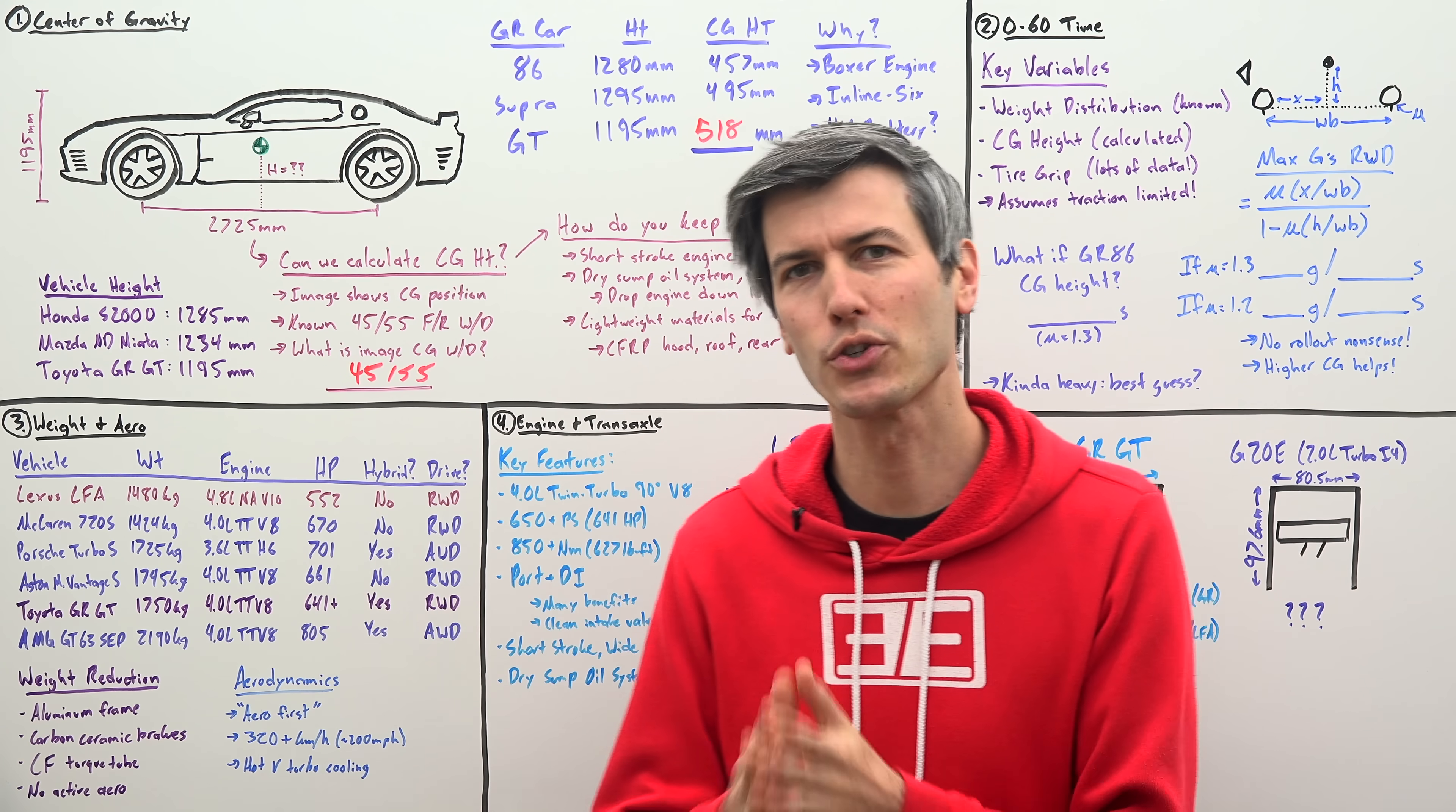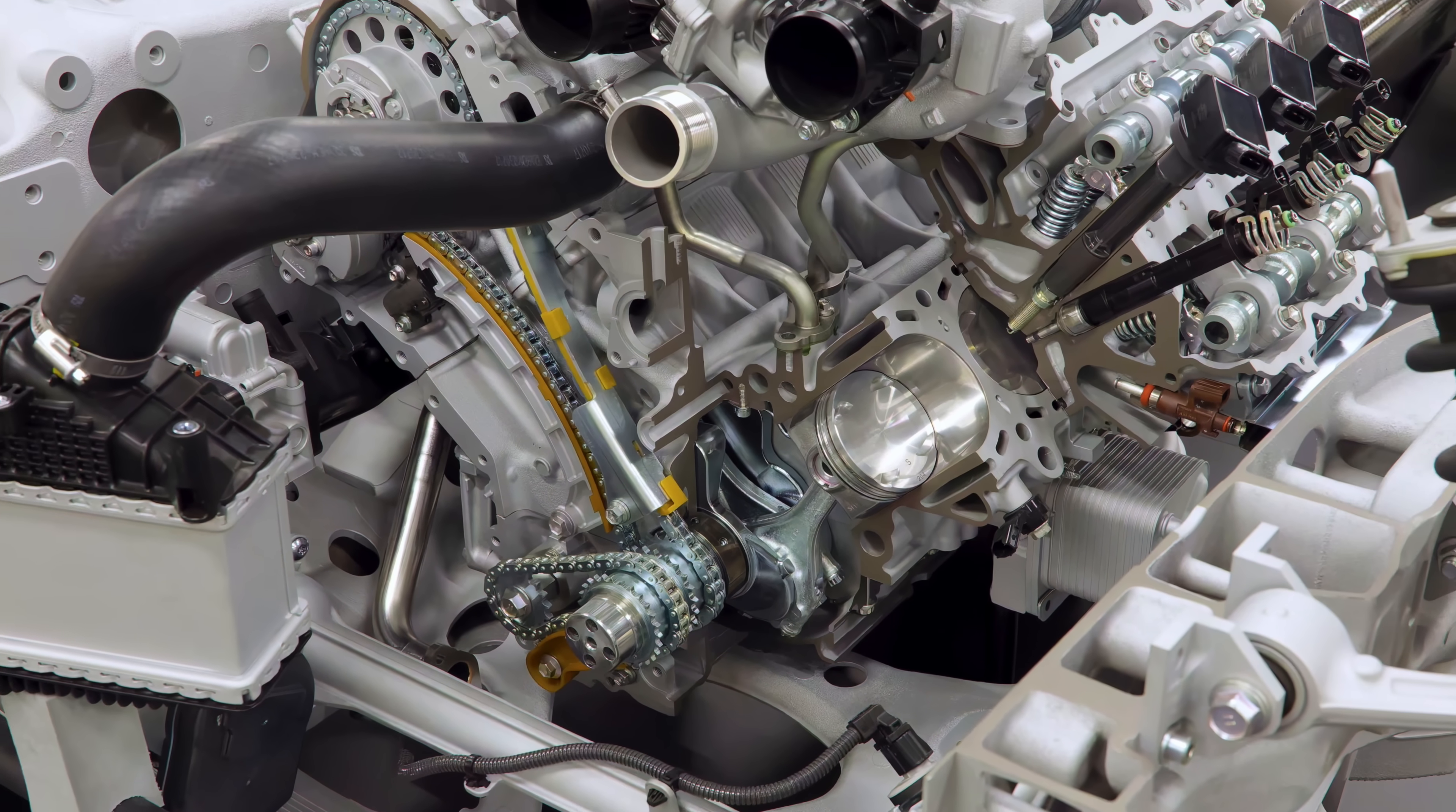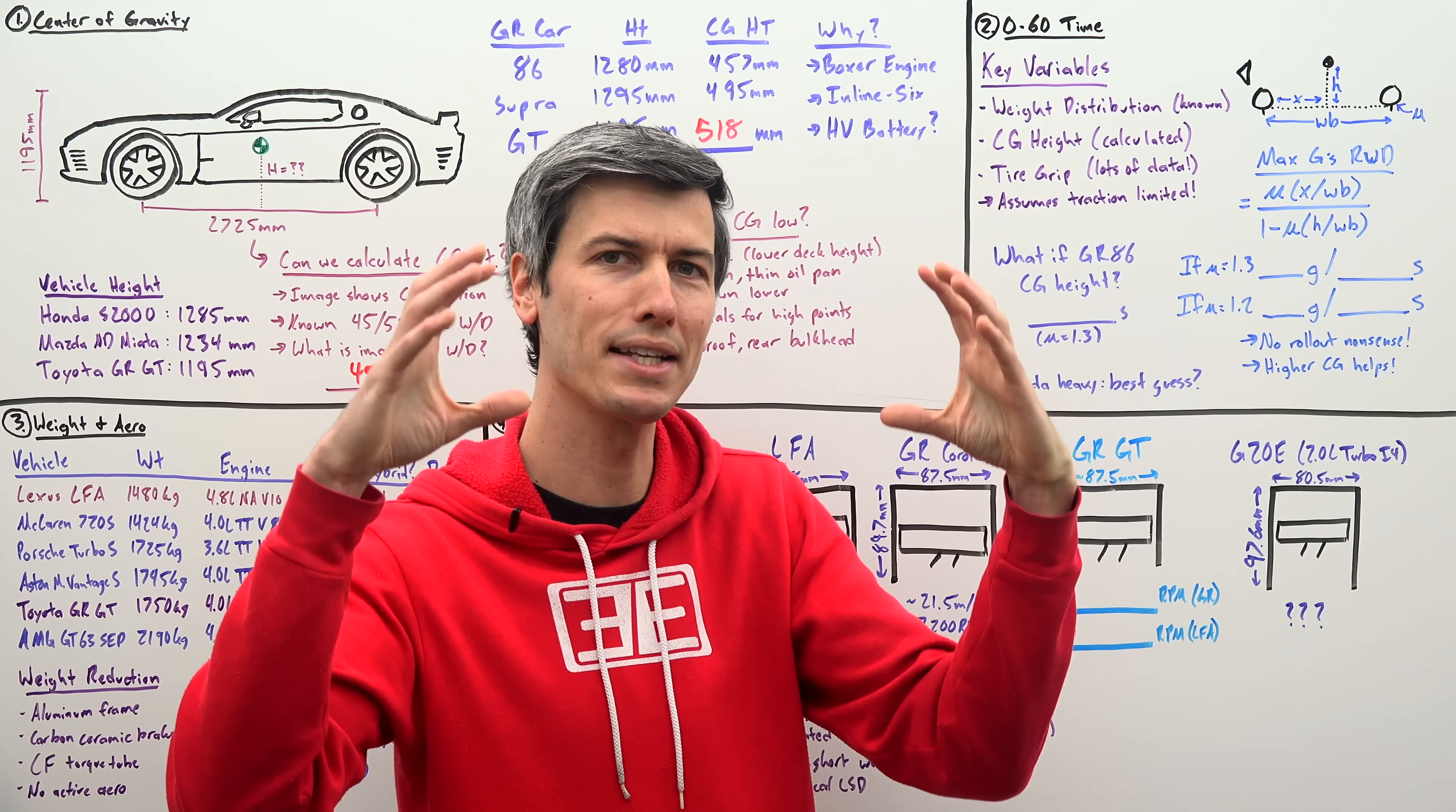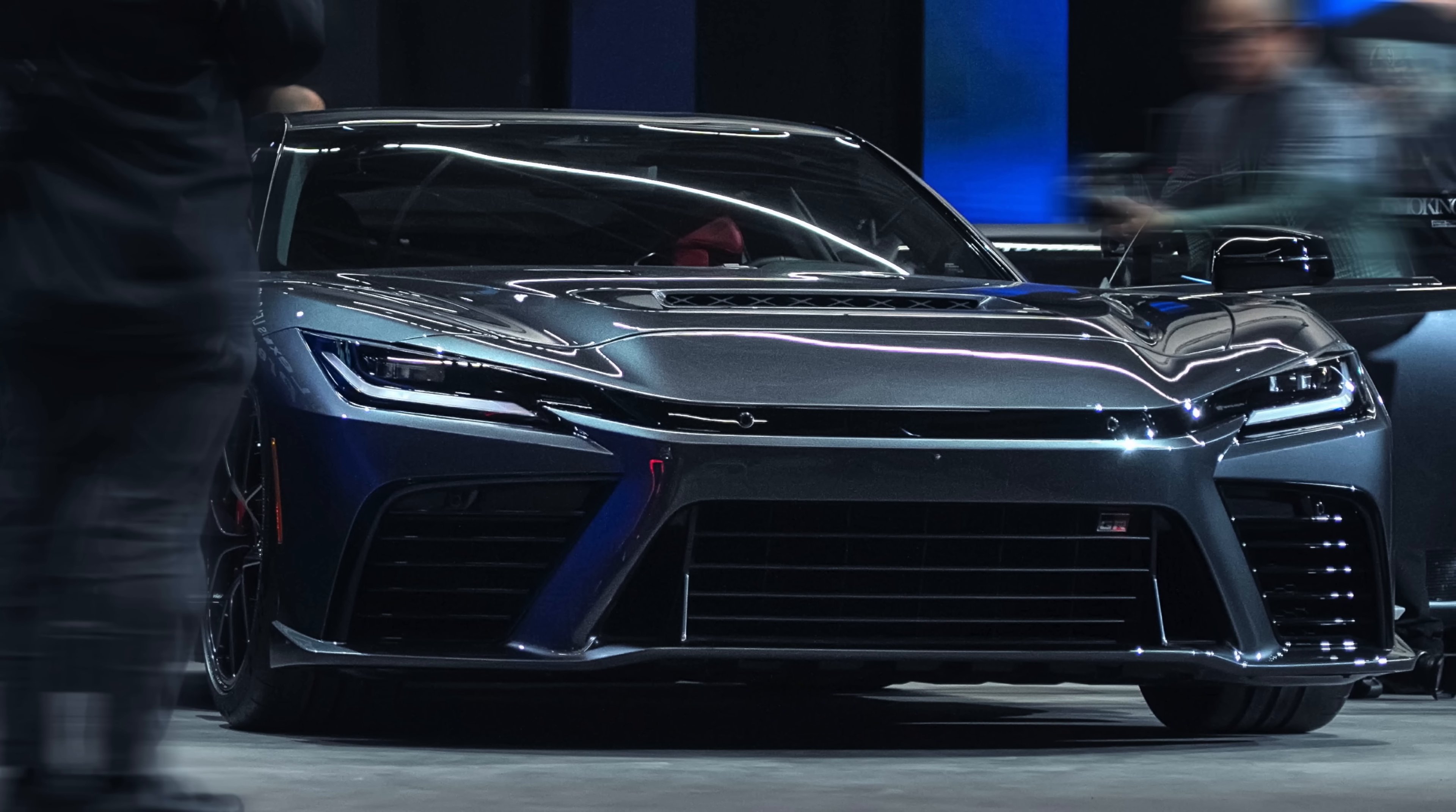But they still have gone through extensive measures to keep the CG as low as possible. First of all, the entire powertrain is mounted extremely low. You can see just how close it is to the front subframe. There's a few things that make this possible. For the engine, they're using a shorter stroke than you might typically see in a Toyota engine. So this lowers the deck height, which brings down the top of the engine. It also has a dry sump oil system, which have thinner oil pans. So that further allows the engine to drop down, helping to enable the crazy low hood line for the front of the car.